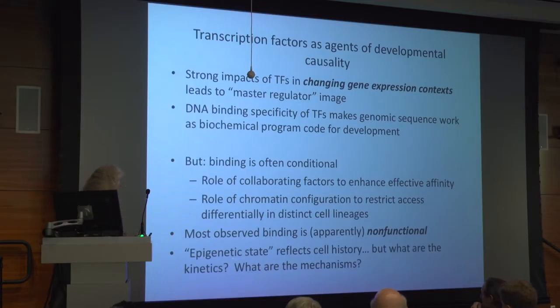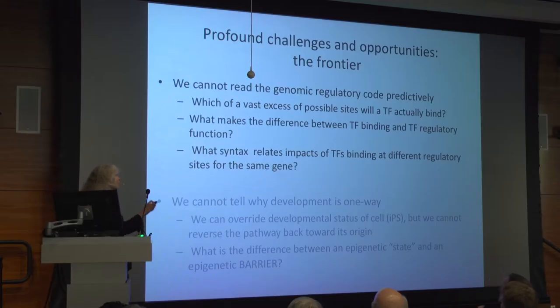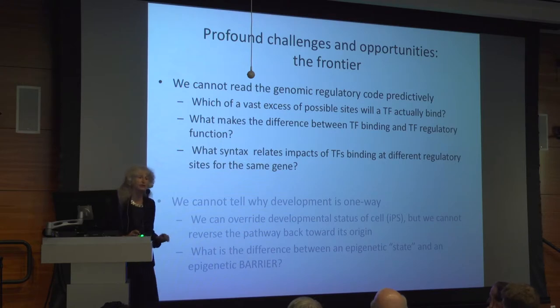The epigenetic state reflects the cell history, but there are really important things we don't know about the kinetics or mechanisms involved in changing the epigenetic state from accessible to inaccessible. We cannot, because of these problems, read the genomic code predictively. I would argue this is a huge challenge for the future if people have the stomach and the logical rigor to be willing to take it on.